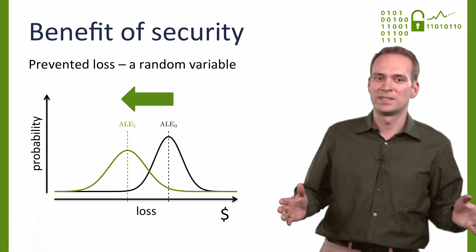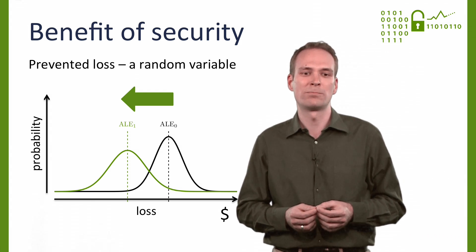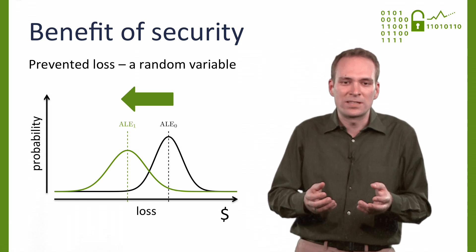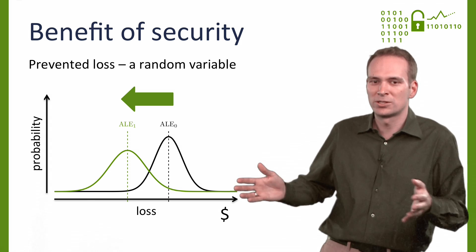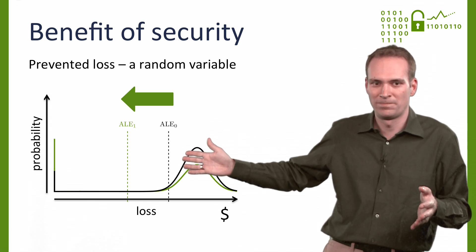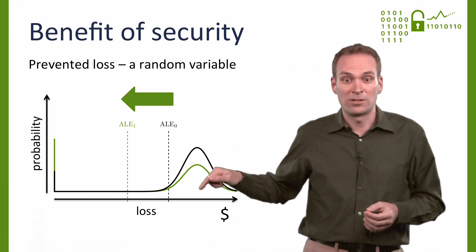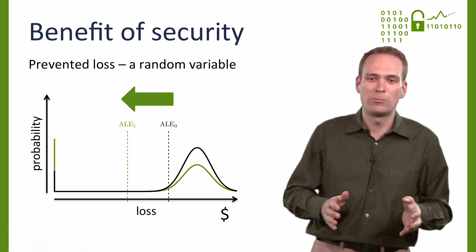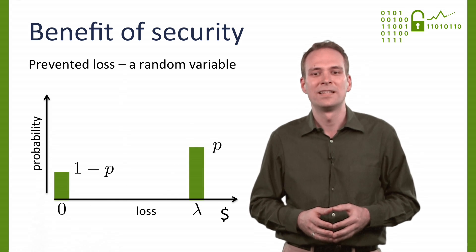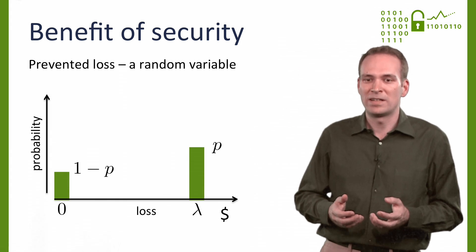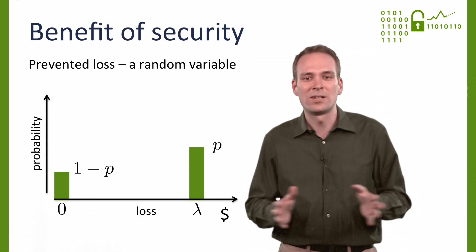Dealing with complete loss distributions is still unwieldy and does not add much if we have little information about the true shape of the loss distribution in practice. We conjecture that true loss distributions are zero-inflated because there is some probability that no breach occurs, so it should look more like this. But we still don't know anything about the shape of the right tail — that is where the catastrophic risks are. To define this problem away, many security investment models simplify the benefit side to a simple Bernoulli random variable. They assume that a loss of fixed size lambda occurs with probability p. With probability 1 minus p, there is no loss at all.